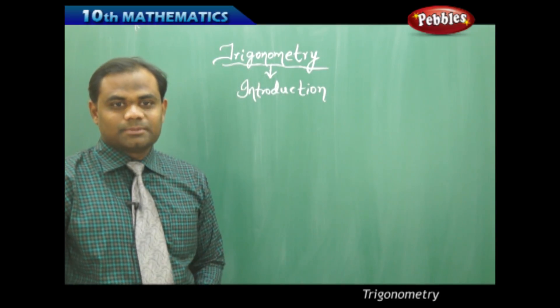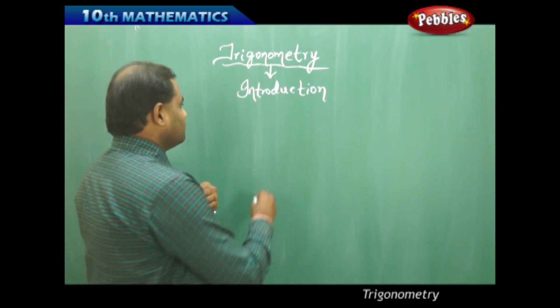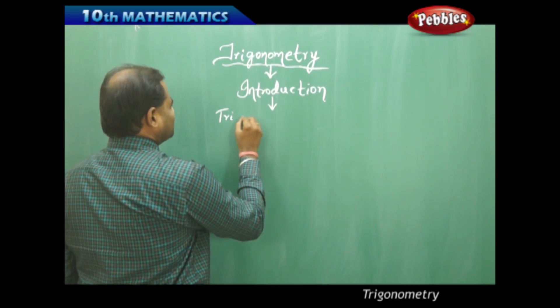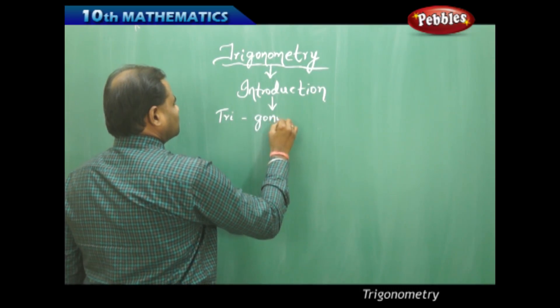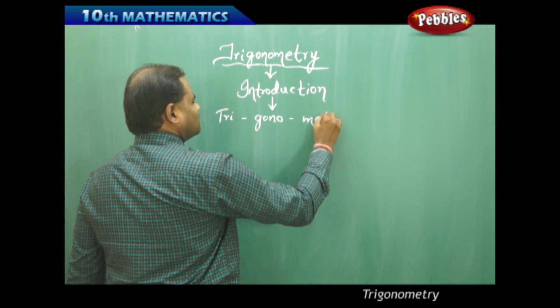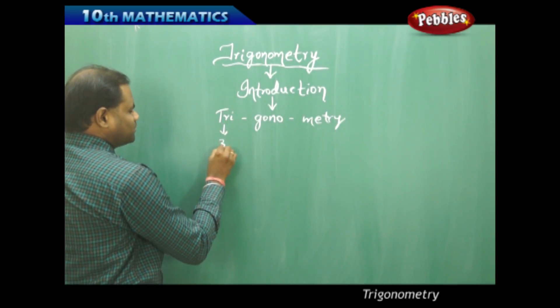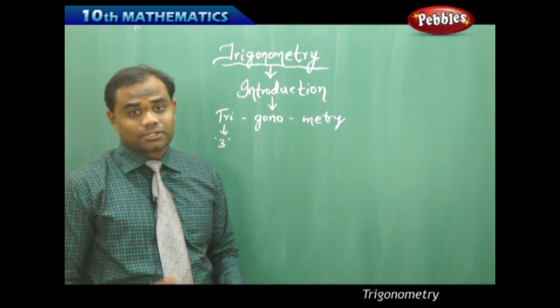Trigonometry has been derived from three different words: trigonometry. The word can be broken down as tri-gono-metry.